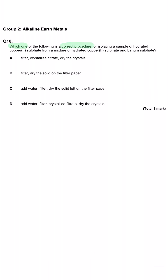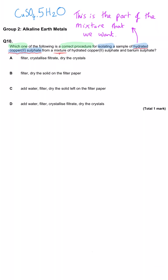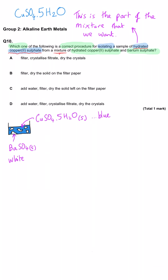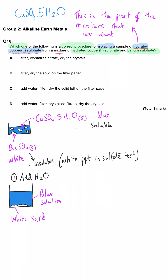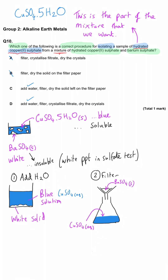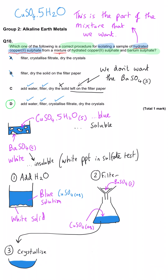Which is the correct procedure for isolating hydrated copper(II) sulphate from a mixture of hydrated copper(II) sulphate and barium sulphate? Both are assumed to be solid. Barium sulphate is insoluble whereas hydrated copper(II) sulphate is soluble, so we add water first — the copper compound dissolves and the barium compound does not. Then we filter out the barium sulphate precipitate. Since the copper compound we want is in solution, we take the filtrate, crystallise it, and dry those crystals to get hydrated copper(II) sulphate. Therefore D is the correct answer.